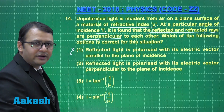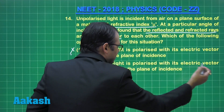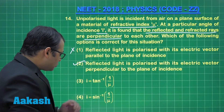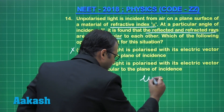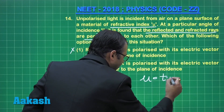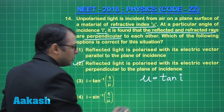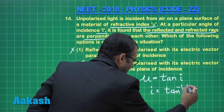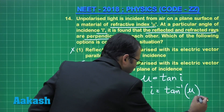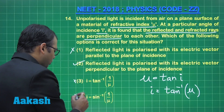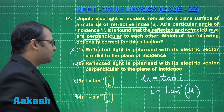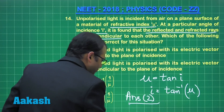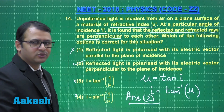The second option says reflected light is polarized with its electric vector perpendicular to the plane of incidence. Since Brewster's law states that mu equals tan I, we can write I equals tan inverse of mu. Neither the third nor the fourth option satisfies this equation. Therefore, the final answer is option 2. Let's move forward to the next question.